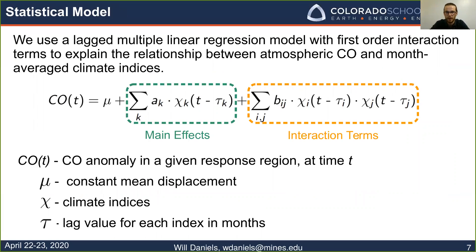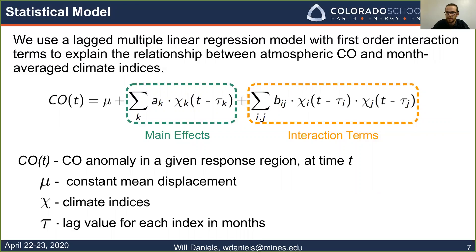Now we can get into the model itself. We're using a multiple linear regression model, and we include first-order interaction terms. In the green box is what we call the main effect — those chi variables are the climate indices, with a sub-k because there are four different indices. They're lagged at t minus tau, and tau has a sub-k as well because each climate index can have its own lag value. The interaction term on the right is just two climate indices multiplied together, capturing the compounding effect when two indices go positive simultaneously.